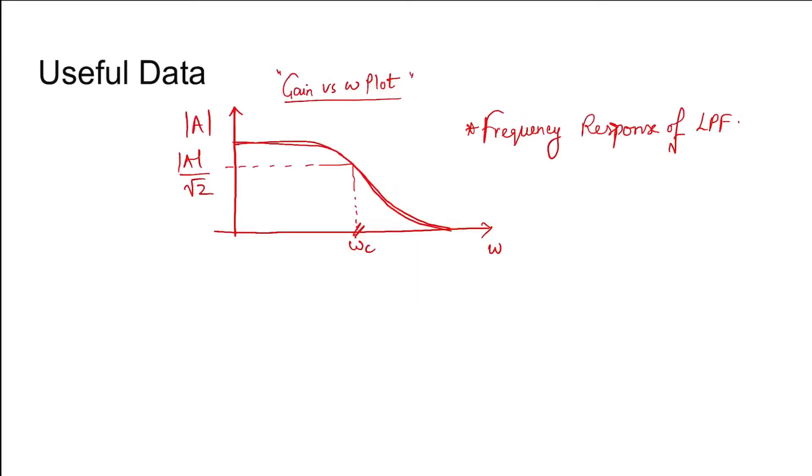Coming to the useful data that will be needed to solve this problem: For a given low-pass filter, the frequency response is like this. There is the gain versus omega response - as you increase omega, the gain will reduce. After a certain point, the gain will be very less. For an ideal low-pass filter, it will be like this.